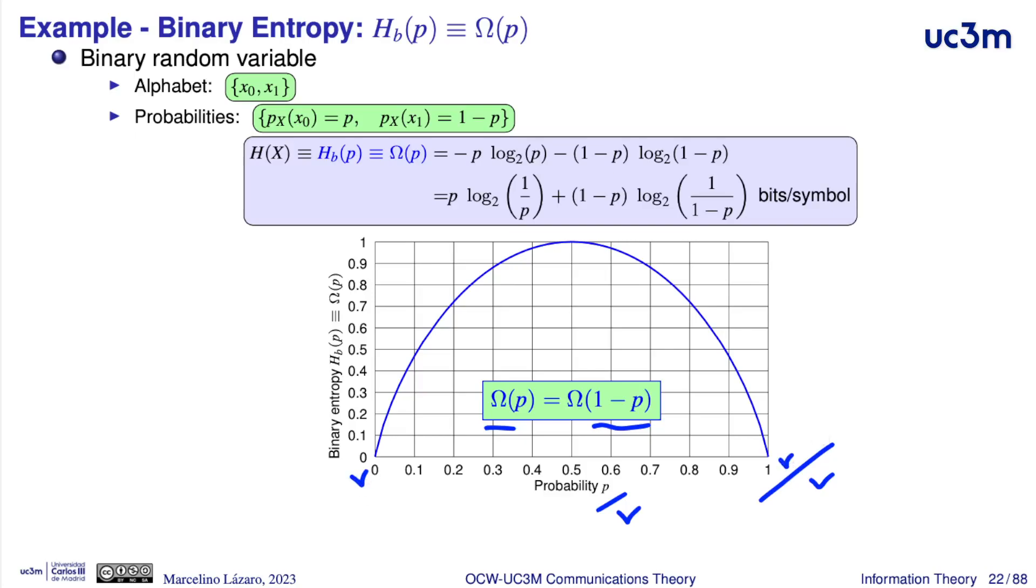we have 0 uncertainty when the probabilities are 0 or 1, in this case there is no uncertainty about the result of the random variable. And the maximum uncertainty is equal to 1, if the units are bits per symbol. And it happens for equiprobable elements in the alphabet of the binary random variable.